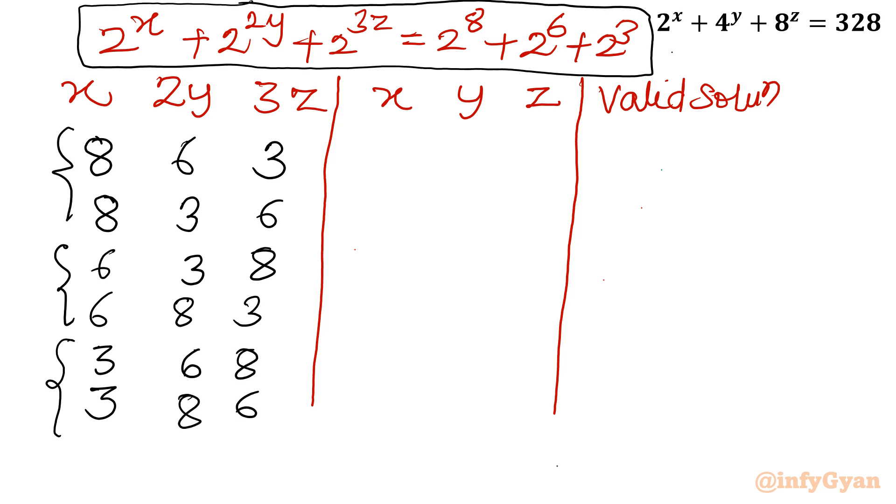Now let us find out the value of x, y, z. Because that is the only concerned point. x, y, z should be natural numbers or positive integers, nonzero. So let us find out x. If x is 8, it would be as it is 8. Once 2y is equal to 6, then y will be equal to 3. 3z is equal to 3, then z is equal to 1. This is valid solution.